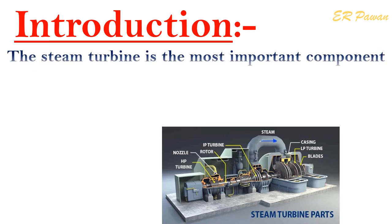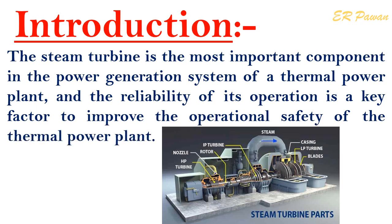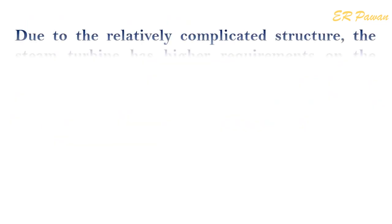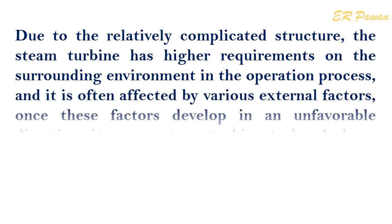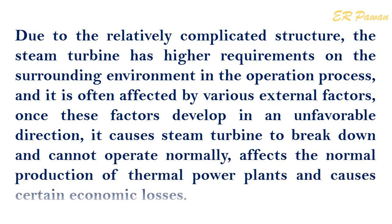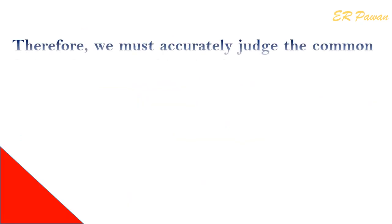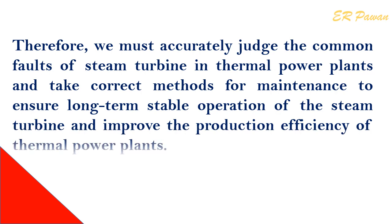The steam turbine is the most important component in the power generation system of a thermal power plant, and the reliability of its operation is a key factor to improve operational safety. Due to its relatively complicated structure, the steam turbine has higher requirements on the surrounding environment and is often affected by various external factors. Once these factors develop in an unfavorable direction, the steam turbine breaks down, affecting normal production and causing economic losses. Therefore, we must accurately judge common faults and take correct maintenance methods to ensure long-term stable operation and improve production efficiency.